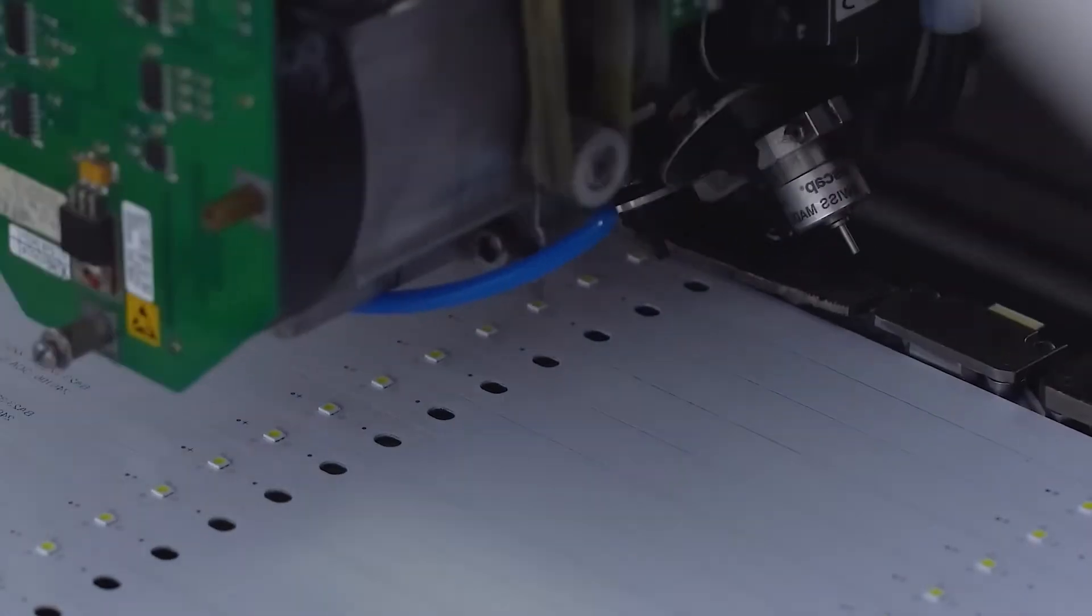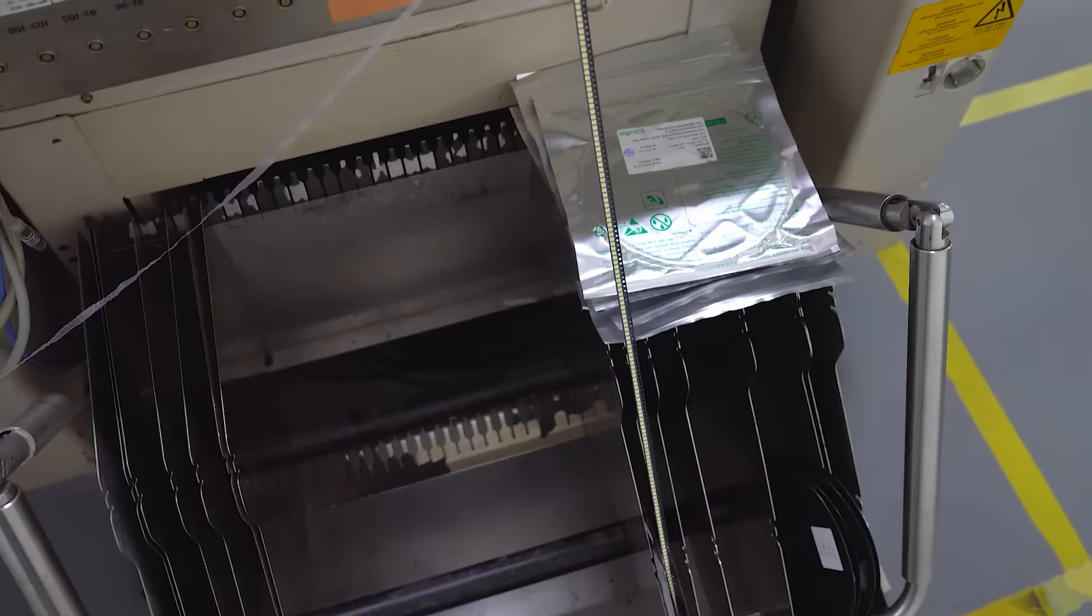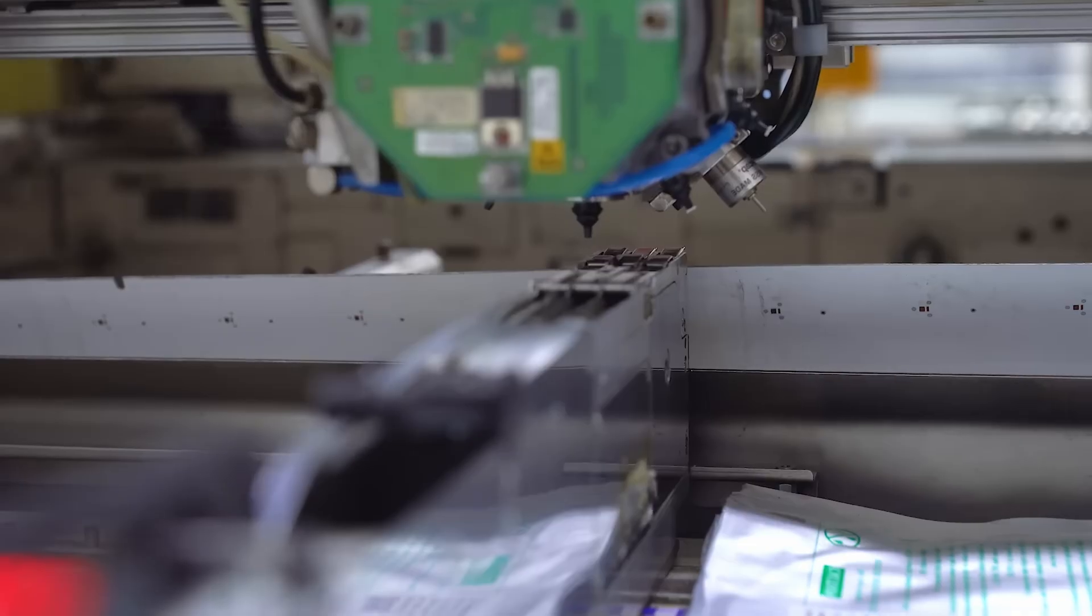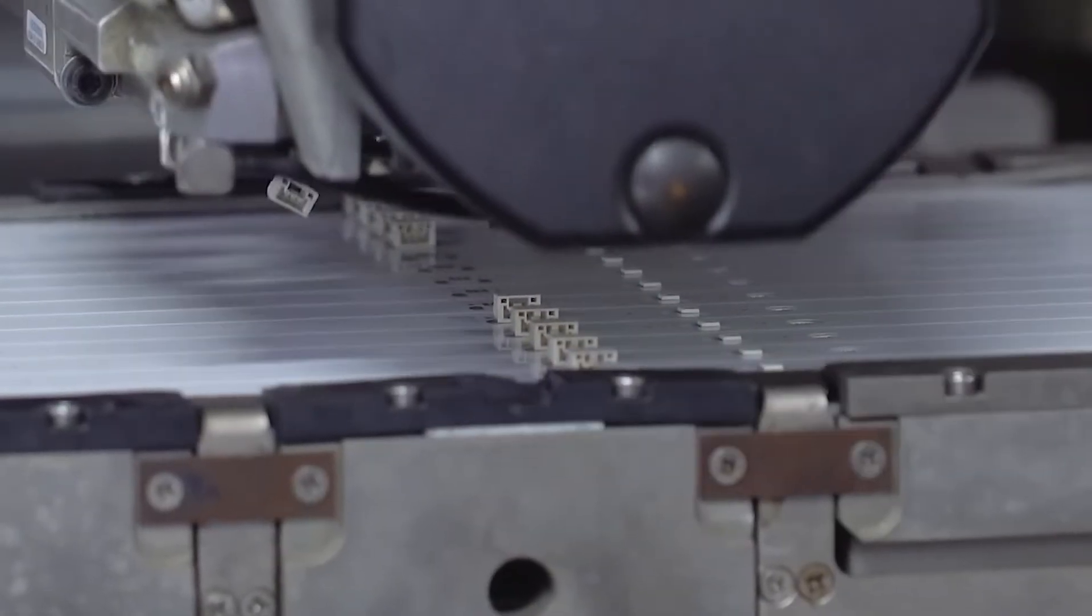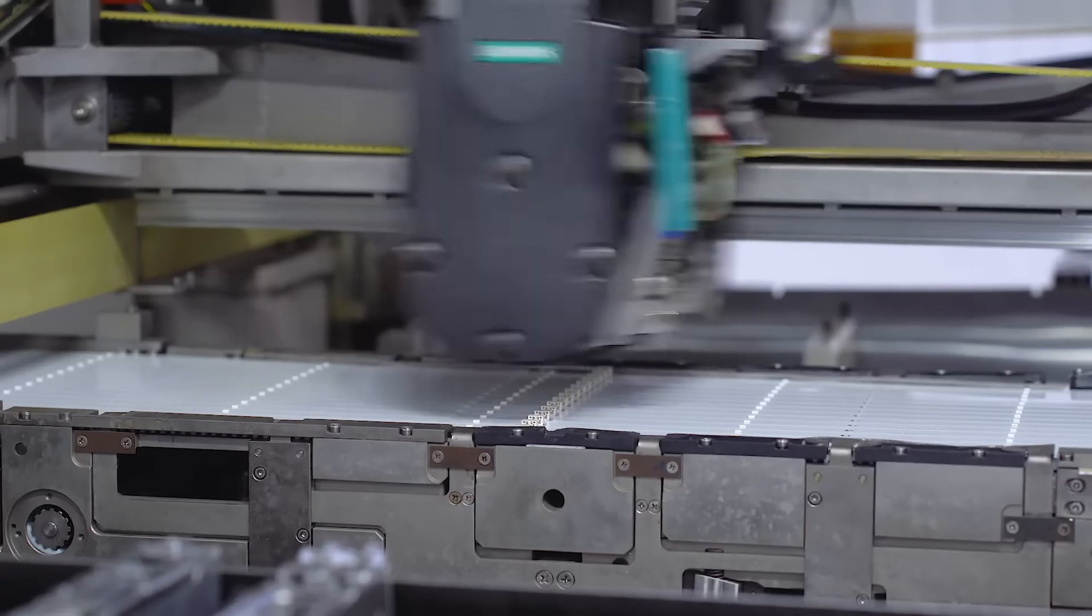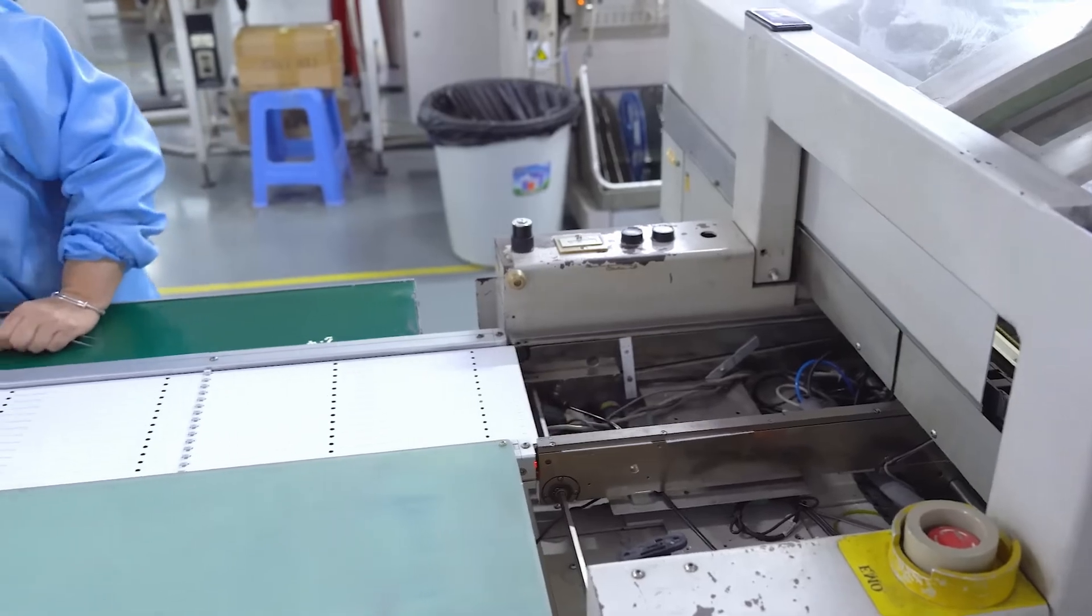Once the LED chips are produced, they are carefully placed onto a substrate or circuit board. This assembly is done with high precision, as the placement and orientation of each LED determine the brightness and uniformity of the backlight.